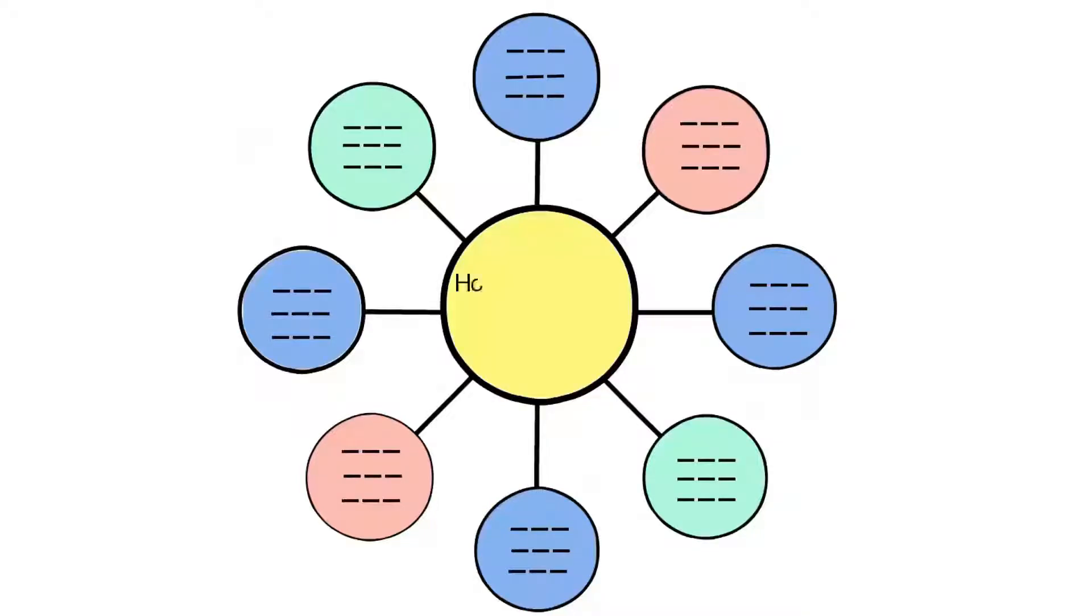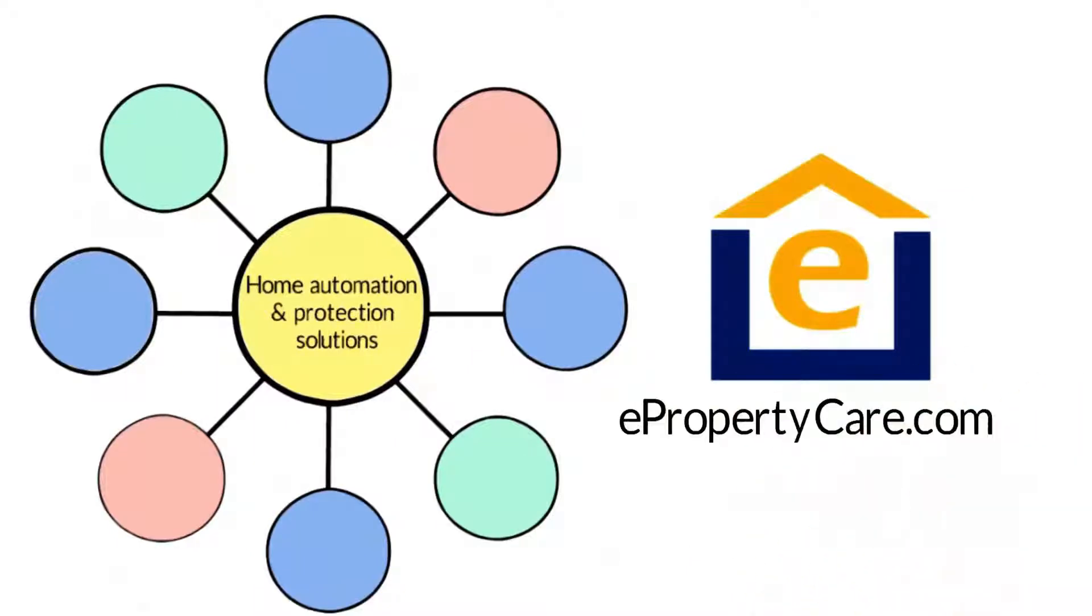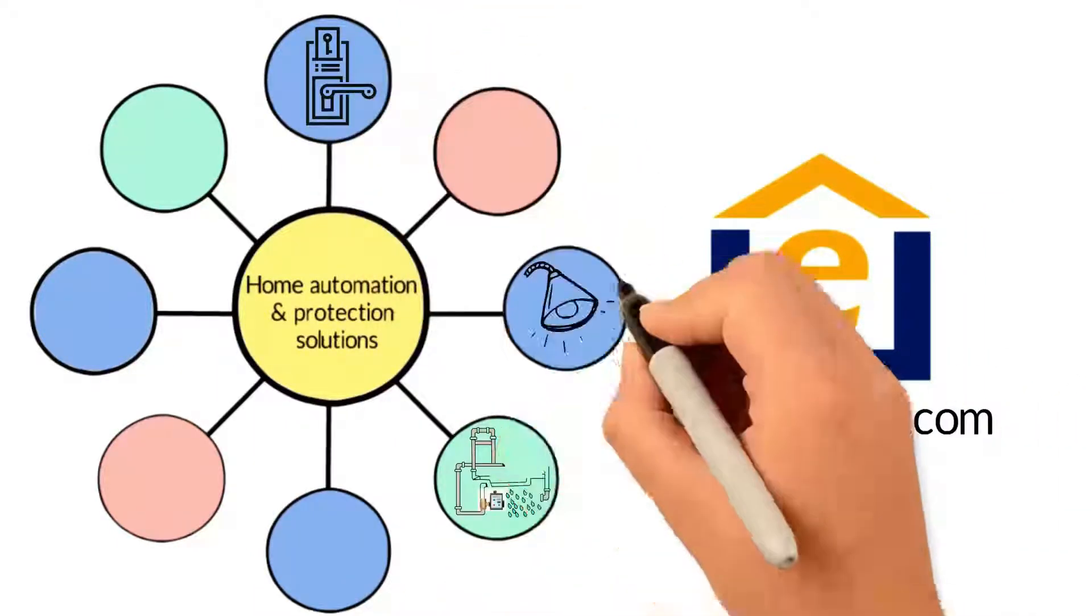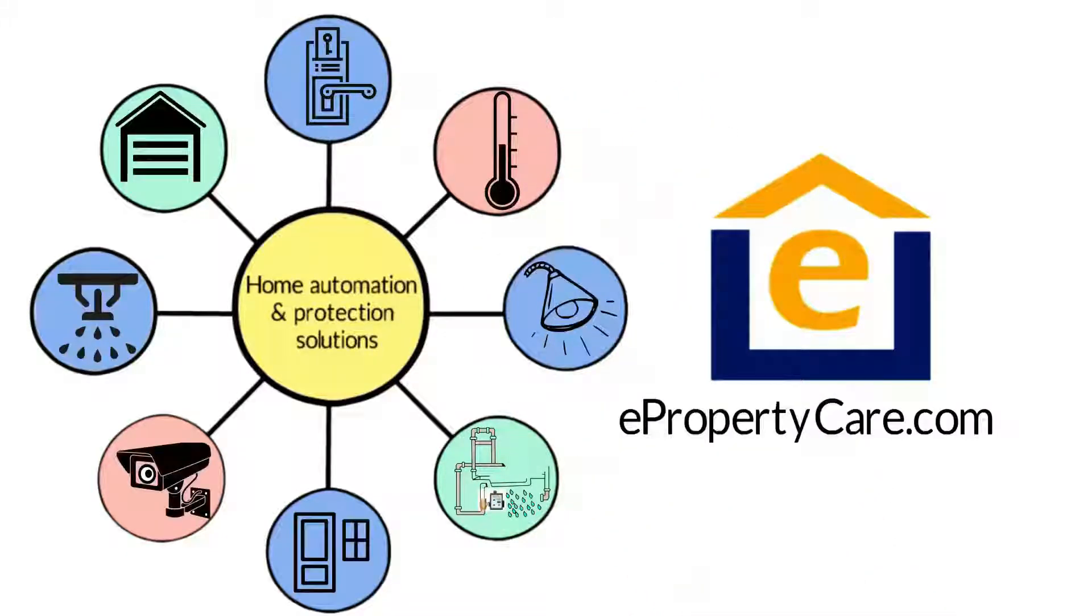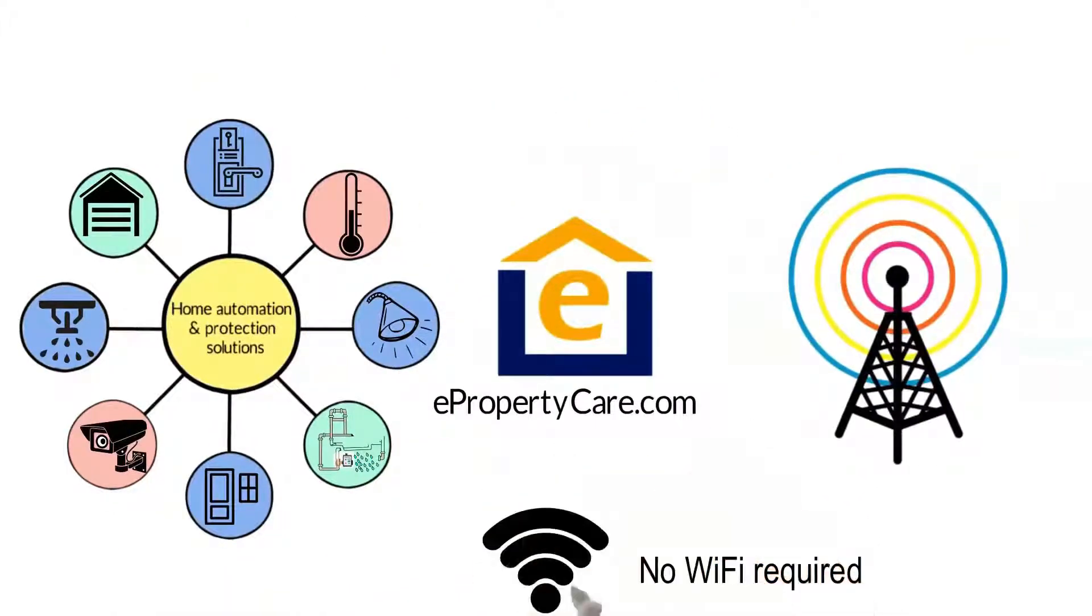The system is part of a suite of home automation and protection solutions offered by ePropertyCare.com that can detect leaks, control locks, monitor temperature, and more all over the cellular network, meaning you don't need Wi-Fi for the system to work.